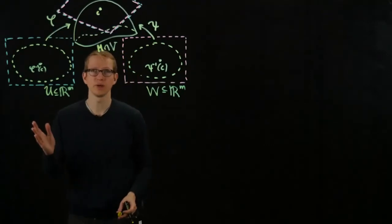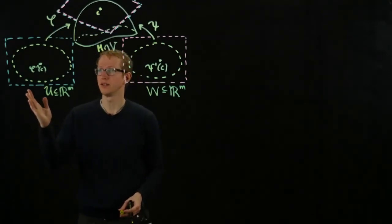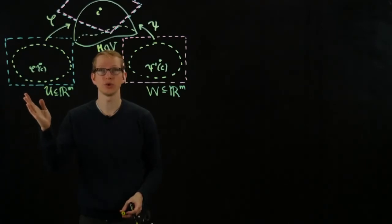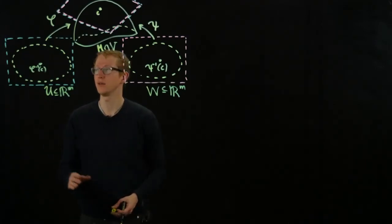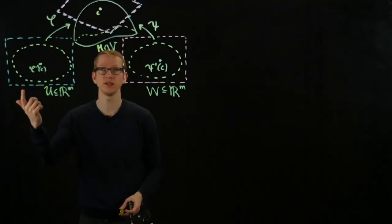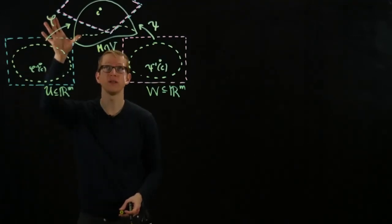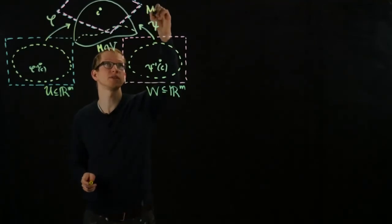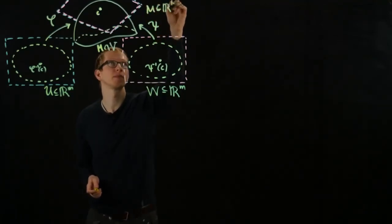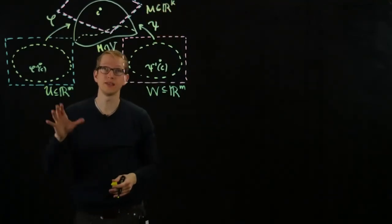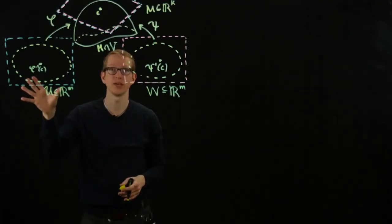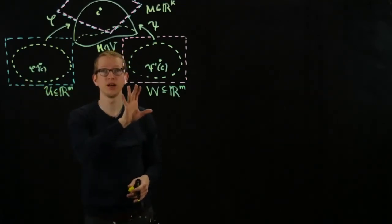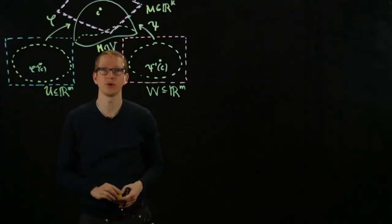The theorem that we mentioned last time stated that the tangent space is well-defined and doesn't depend on the choice of parametrization. Namely, if I chose the tangent space here and took its image in the manifold in R^k, assuming that M is a subset of R^k, then the image of this tangent space is going to coincide with the image of this tangent space for any other parametrization.